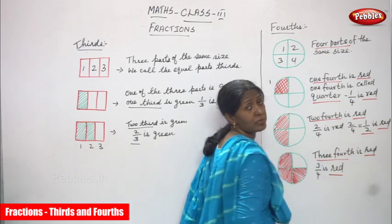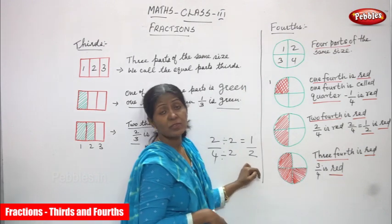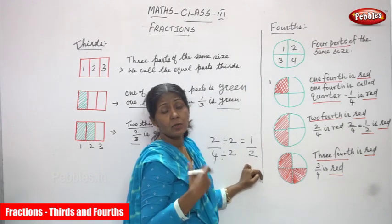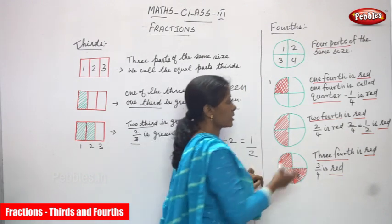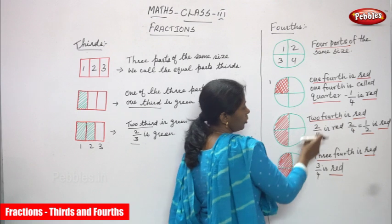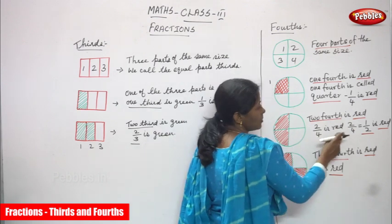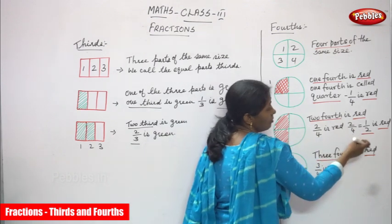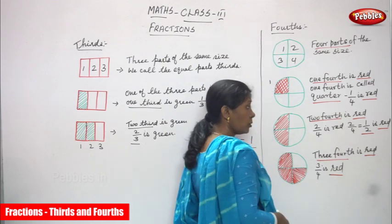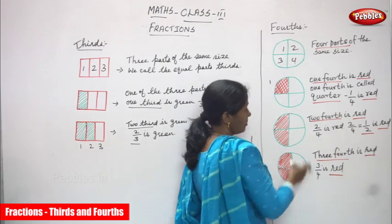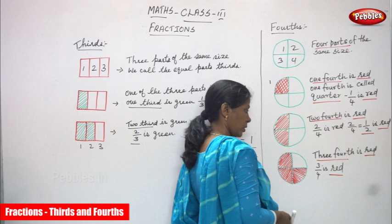So half of the part is red in color. Two fourths — otherwise we can call it as half. Two fourths means two by four in fraction, and two by four equivalent fraction is half — one by two in fraction. Two fourths is equal to half.